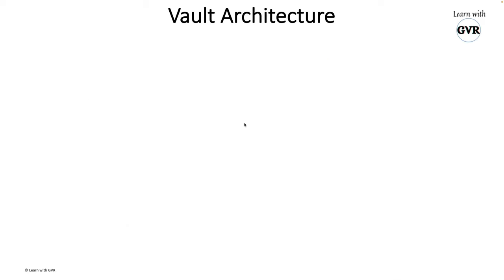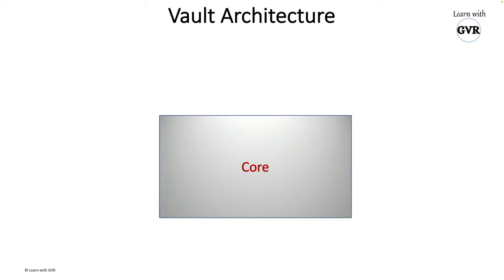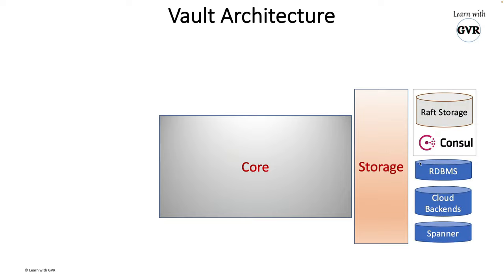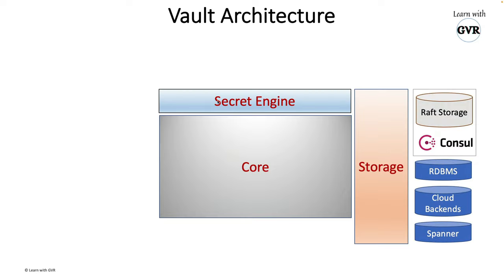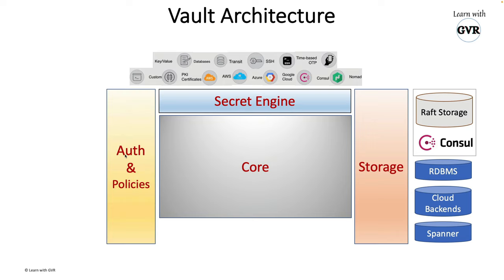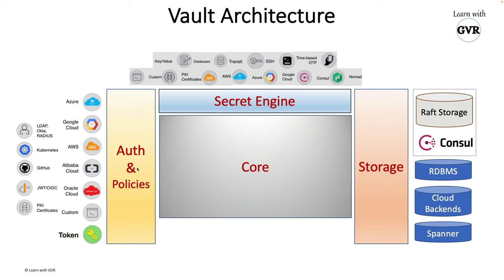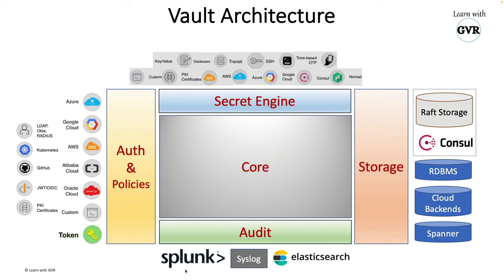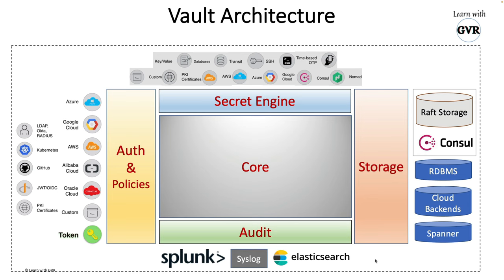First, let's look at the Vault architecture. Vault has a core engine with internal and external storage. It has a secret engine where you can store a variety of secrets. Vault also has a gate-pass kind of authentication and a policy which is the authorization mechanism, where you can authenticate with any of the available methods. From an audit point of view, you can plug in any available audit backend.